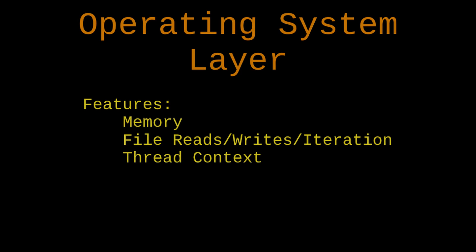Thread context doesn't belong in the base layer since it has to be different on each operating system, but it's pretty fundamental to get in early for the way I want to do things. Then I'll put in some odds and ends: handling time formats, getting entropy from the operating system, and loading shared libraries. There's certainly a lot more that could go into an OS layer, but I'd like to keep this module brief. We can always go back and add more as the need arises. These are just the things I find most useful — especially memory, file management, and thread context.